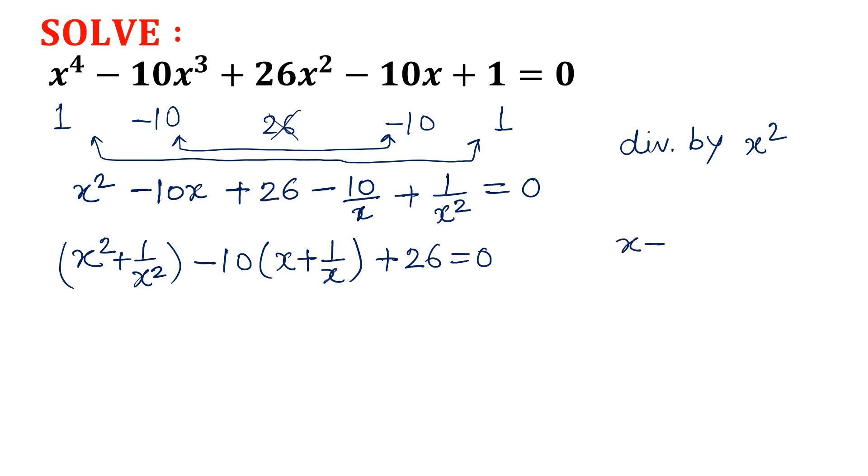Now I am going to put x plus 1 over x is k suppose. So what is the value of x square plus 1 over x square? So take the square of that then I will write x square plus 1 over x square plus 2 is equal to k square. So that value will be equal to k square minus 2. So equation will convert into k square minus 2 minus 10k plus 26 is equal to 0.